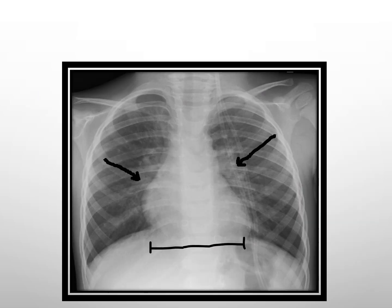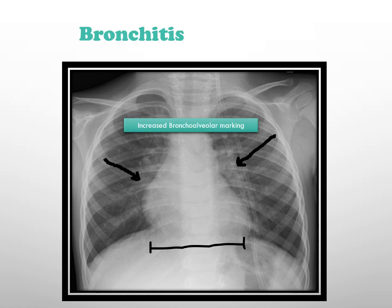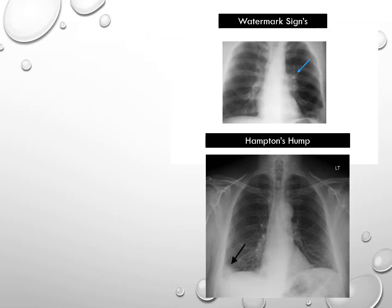This x-ray shows bronchitis. We can see here increased bronchovascular markings and increased cardiothoracic ratio.